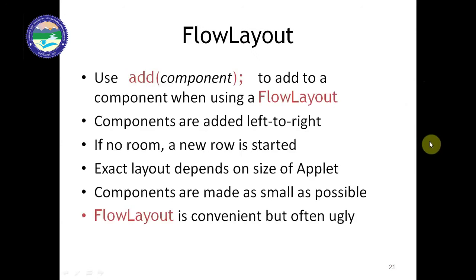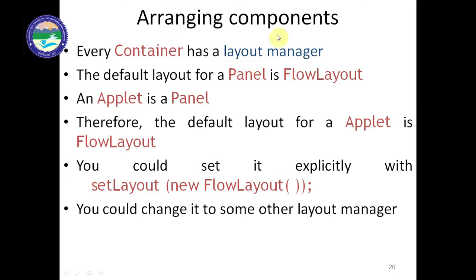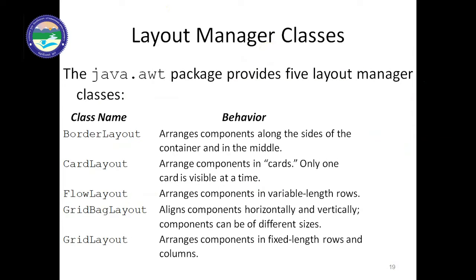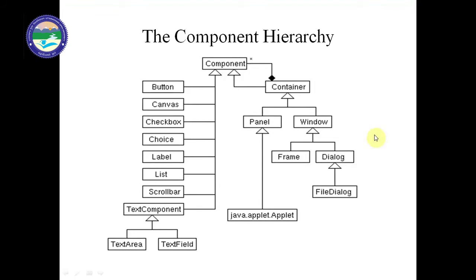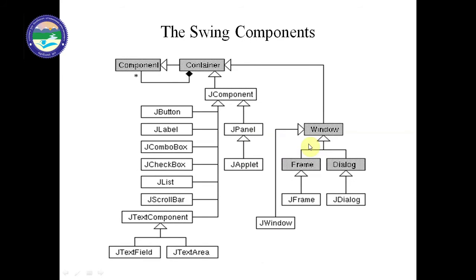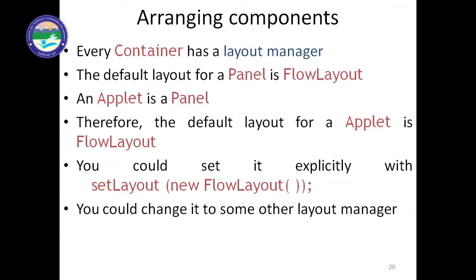When the program runs, the output will display accordingly. Every container has a layout manager. We have five layouts. In AWT, the containers are panel, window, frame, dialogue, and file dialogue. Applet is part of the panel. In Java Swing, we prefix these with J — for example, JPanel instead of Panel. The Swing components are lighter than AWT components.